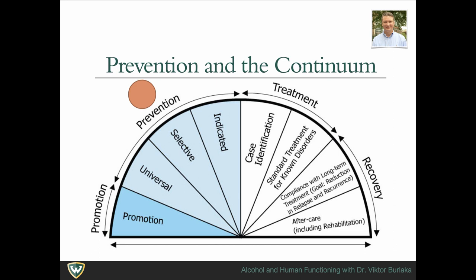Selective prevention is more targeted than universal prevention, directed toward populations with somewhat greater than average potential for developing problem use—for example, youth who live with one or more parents engaged in substance misuse. Indicated prevention is even more targeted, delivered to individuals showing warning signs foreshadowing the development of problem use.